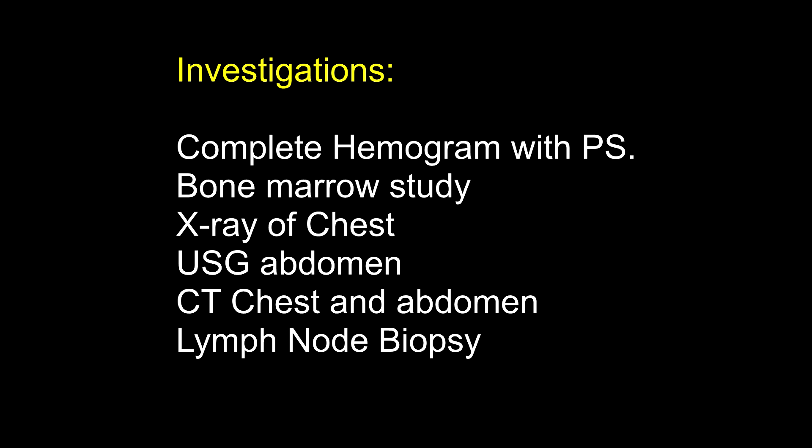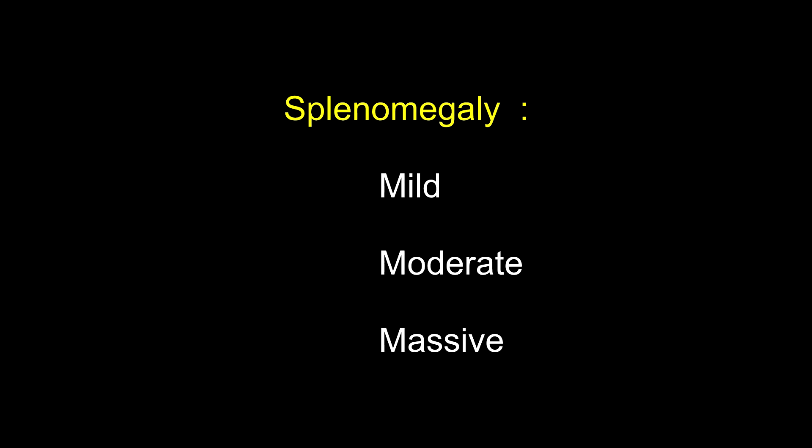How do you label splenomegaly as mild, moderate or massive? Splenomegaly up to 5 cm is labeled as mild. Spleen between 5 cm to the umbilical line is termed moderate, and splenomegaly crossing the umbilicus is termed massive. What are the causes of massive splenomegaly? Chronic myeloid leukemia, malaria, Kalazar. It may also be seen in extrahepatic portal hypertension, myelofibrosis, myelosclerosis and Gaucher's disease.